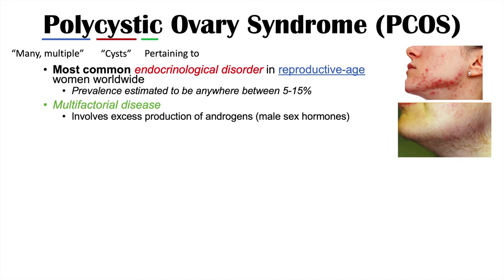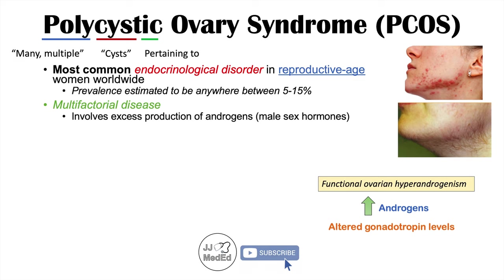The majority of cases have what we call functional ovarian hyperandrogenism, which means that their ovaries produce excessive amounts of androgens. These high androgen levels lead to altered gonadotropin levels, which leads to issues with ovulation — oftentimes inhibiting or prohibiting ovulation from occurring.